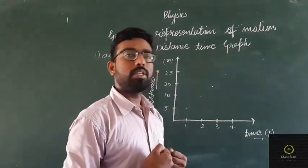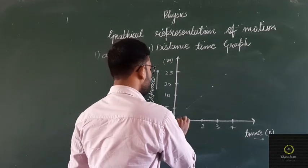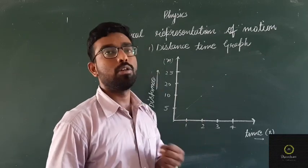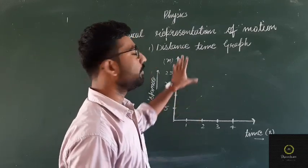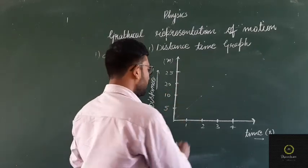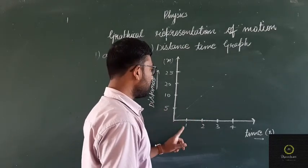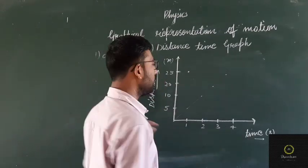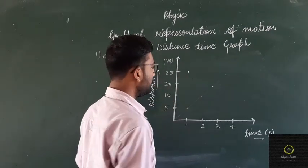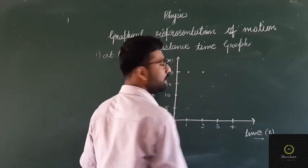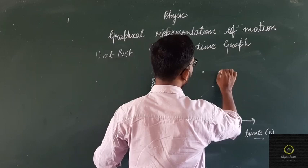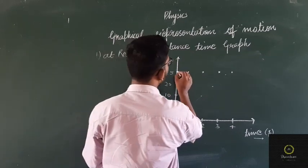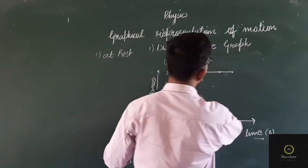For the rest position — if an object is not moving, how do we draw the distance-time graph? Suppose an object covers 25 meters in the first second, 25 meters in the next second, 25 meters in the third second, and again 25 meters in the final second. If I draw a line connecting all these coordinates, it forms a constant line.